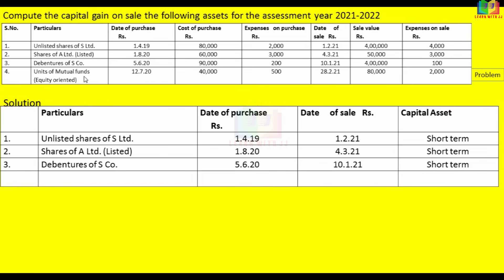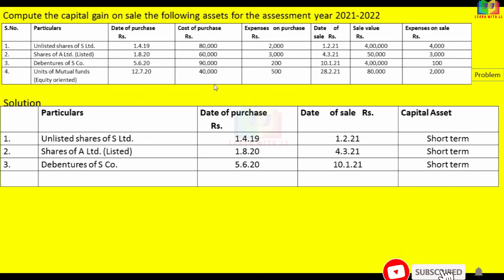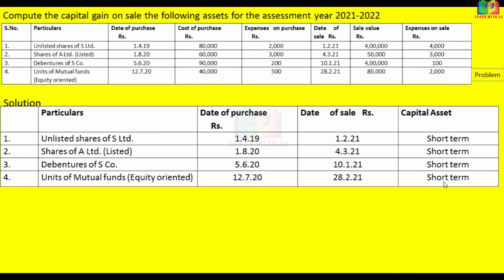If held beyond the 12-month period — for example, sold on 12th July 2020 or 12th July 2021 — we determine whether it is long-term or short-term accordingly. This asset is classified as short-term.